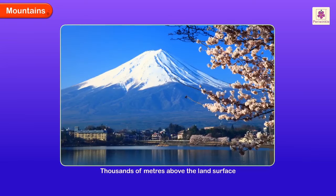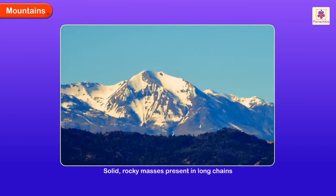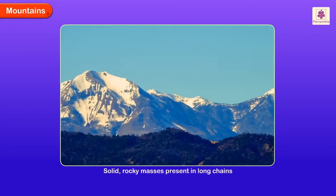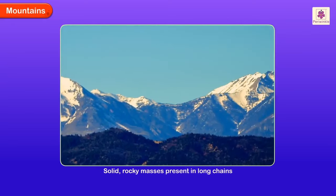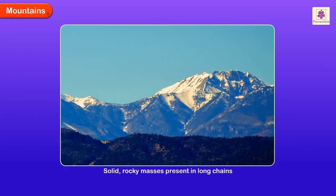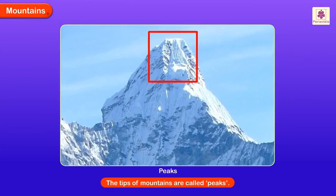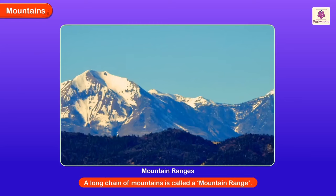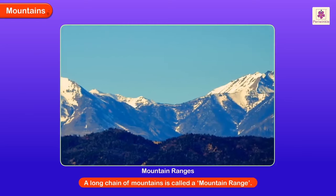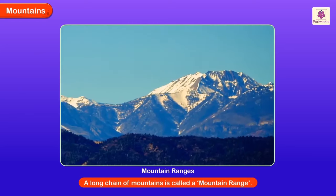Mountains are landforms that rise up to thousands of meters above the land surface. These are solid, rocky masses present in long chains. The tips of mountains are called peaks.